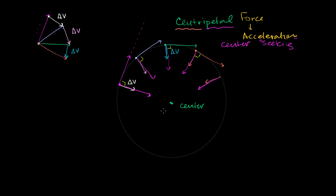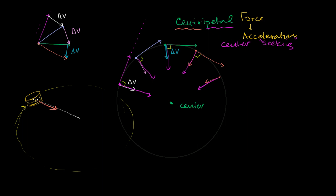Now, you might ask where does this happen in everyday life? The most typical example — something most of us have done as a kid — is a yo-yo. If you have a yo-yo and you whip it around on a string, the yo-yo goes in a circle. Even though the magnitude of its velocity might be constant, the direction of its velocity is constantly changing. What causes it to go in a circle is your hand pulling on the string and providing tension. The centripetal force in this yo-yo example is the tension in the string that's constantly pulling the yo-yo towards the center.